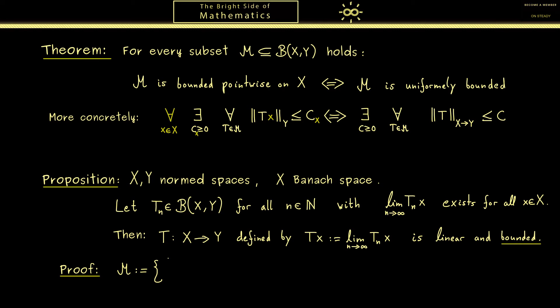Now in order to apply Banach-Steinhaus we need a set M which is all the operators T_n together. And by assumption M is what we call bounded pointwise on X. Of course the existence of this limit implies that the limit of the norm also exists. And this is just a convergent sequence in R where we know it can't be unbounded which means we always find such a constant c_x.